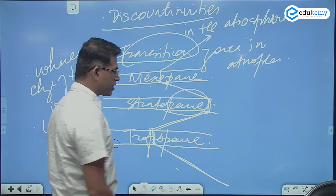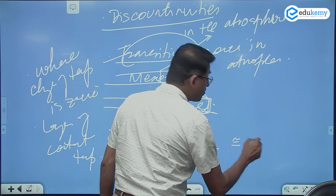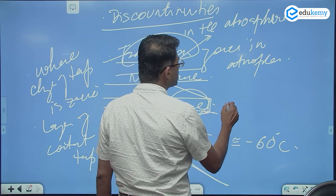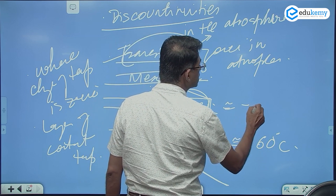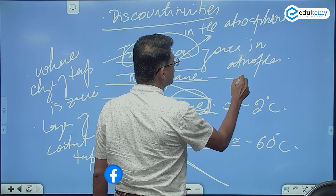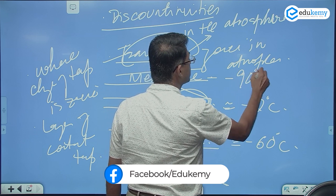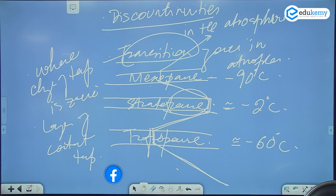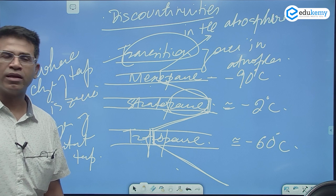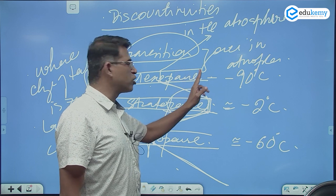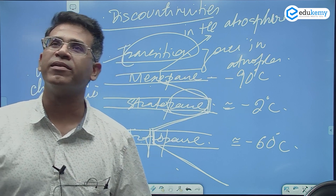The tropopause temperature is approximately minus 60 degrees centigrade. Stratopause is approximately minus 2 degrees centigrade. Mesopause is approximately minus 90 degrees centigrade.